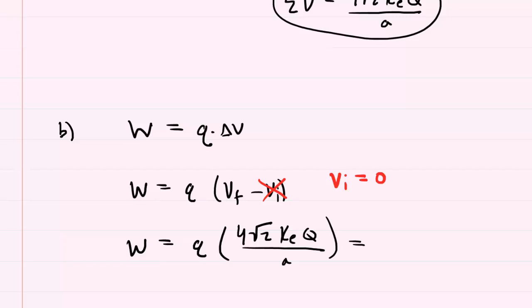We might just move the little q since we're multiplying. We can sort of transfer it to the numerator here. So you would have 4 radical 2 k sub e, capital Q, lowercase q, all over A, and this would be the correct answer to part B. Thank you.